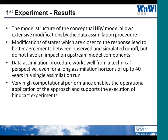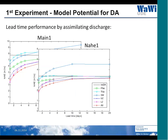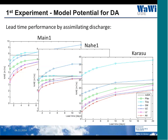In the hindcast experiments looking at forecast performance, the variables giving better performance are the upper zone and lower zone states. Varying temperature makes no difference or even degrades the procedure and does not lead to better lead times. This behavior is consistent in the Nahe catchment and the Karasu catchment, all behaving relatively similarly.